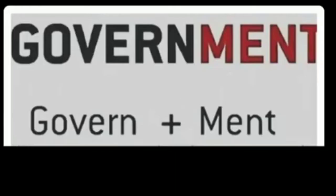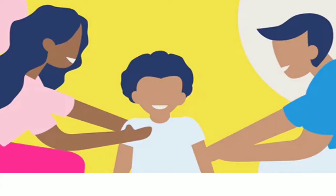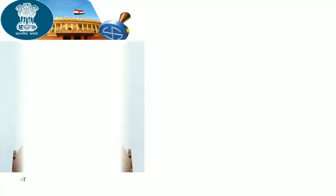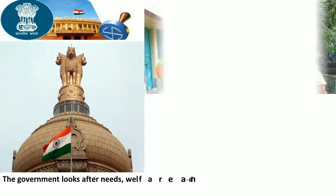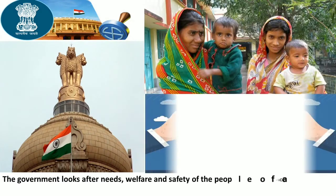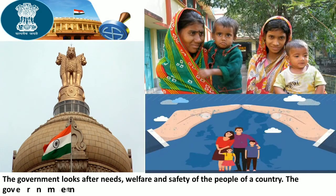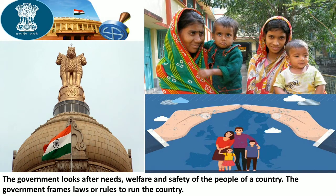First of all let us see what is government. Dear children, just as our parents look after our needs at home, similarly the government looks after the needs, welfare and safety of the people of the country. The government frames laws or rules to run the country.